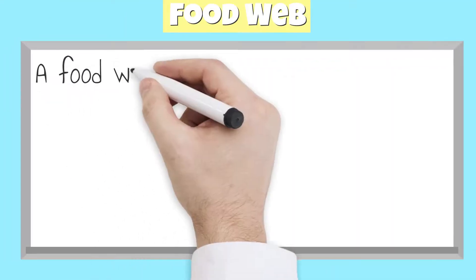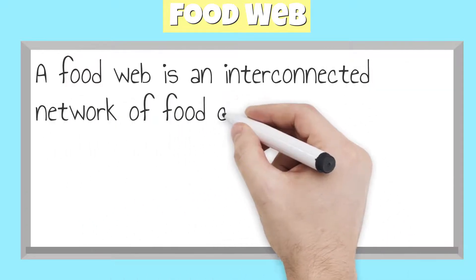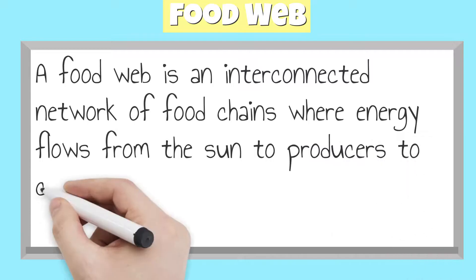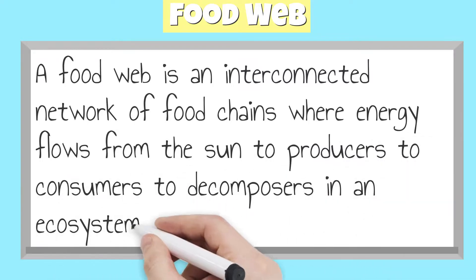A food web is an interconnected network of food chains where energy flows from the sun to producers, to consumers, to decomposers in an ecosystem.